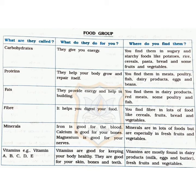Now activity 5 you have to do on your own. It is a chart. You have to study the chart and then make a list of what you eat from breakfast to dinner, so you can calculate how many calories you are taking per day.